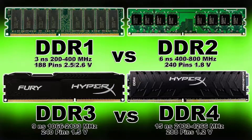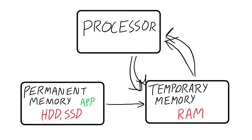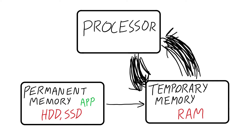Temporary memory is DDR1, 2, 3, and 4, soon to be 5. How these coincide: you have an application saved in your permanent memory. Once you open that application, the entire app isn't in use at once — only what's necessary at the time. This helps keep things running smoothly because temporary memory is constantly communicating with the processor. Thus, more RAM or temporary memory allows more processes to function at once. If you want to save that temporary memory, you save it to your permanent memory or hard drive, because once you turn the computer off, that temporary memory is gone.